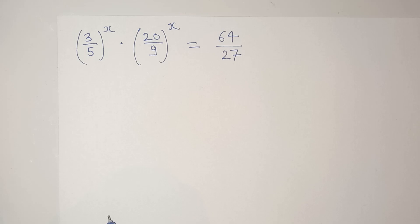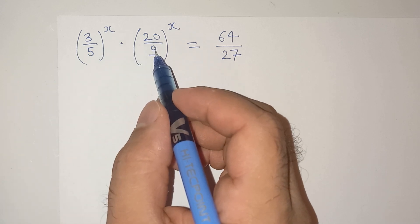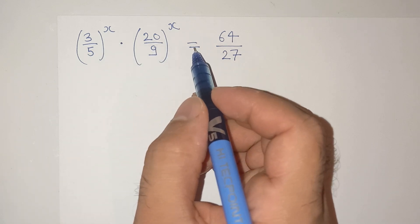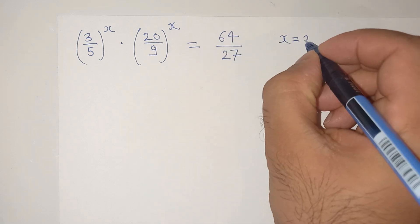Hi guys, welcome back to your channel. We are going to solve this question today which is 3 by 5 power x multiplied by 20 by 9 power x equals to 64 divided by 27. We have to find the value of x.